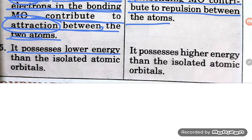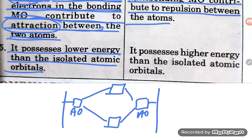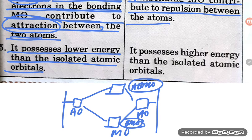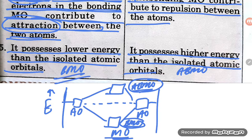The fifth point: the bonding molecular orbital possesses lower energy than the isolated atomic orbitals. If you combine two atomic orbitals, they form two molecular orbitals. The bonding molecular orbital (BMO) is lower in energy than the atomic orbital level, and the antibonding molecular orbital (ABMO) is higher in energy. So lower energy means bonding molecular orbital, and more energy than the atomic orbital means antibonding molecular orbital.